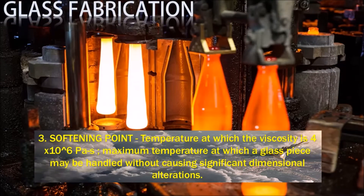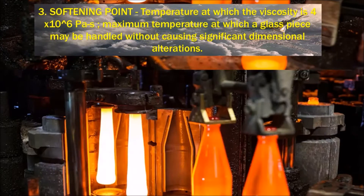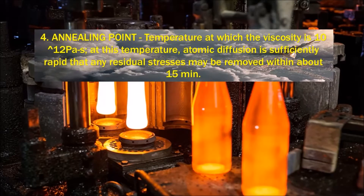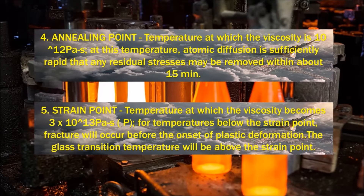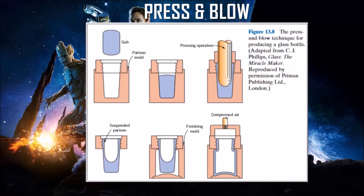For glass fabrication, there are some key temperature points to know. The melting point is the temperature at which the glass is fluid enough to be considered a liquid. The working point is when the glass is easily deformed, and the softening point is the maximum temperature at which glass can be handled without causing significant dimensional alterations. The annealing point is the temperature at which atomic diffusion is sufficiently rapid that residual stress may be removed within about 15 minutes. The strain point is below which fracture will occur. For press and blow, a gob — a piece of heated, soft glass — is pressed and then blown into shape.